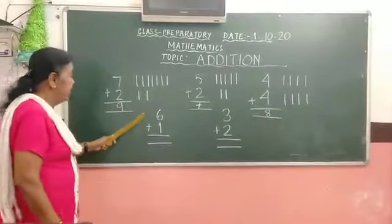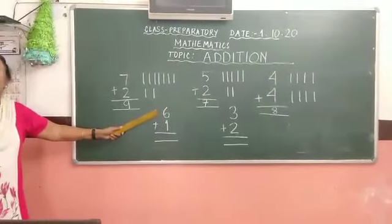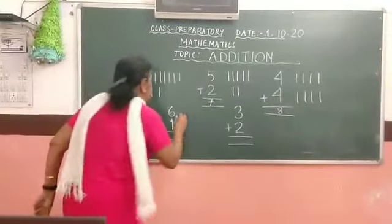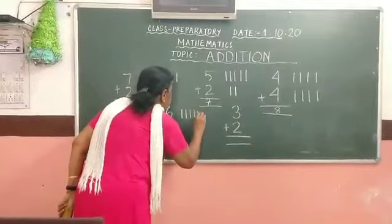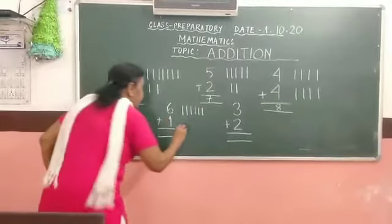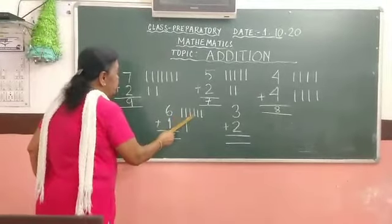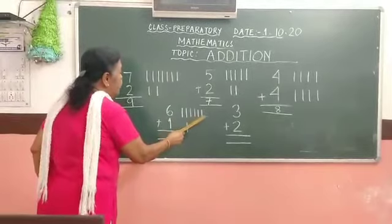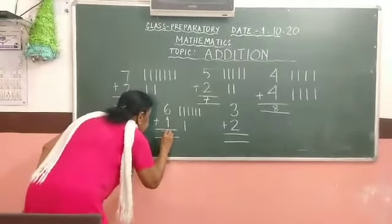Come again here. Six. How many lines will we draw? There will be six lines. Yes. Six lines. One, two, three, four, five, six. Here only one. One. Now count. One, two, three, four, five, six, seven. Seven.